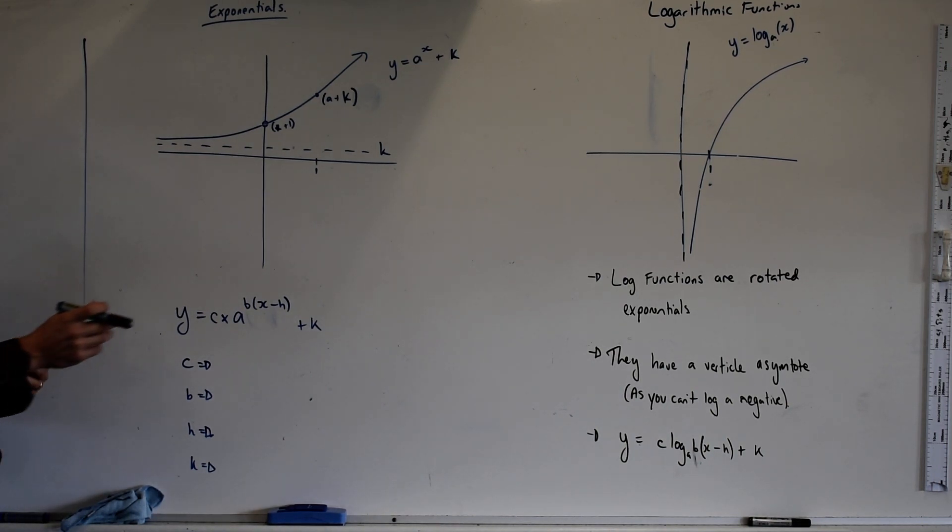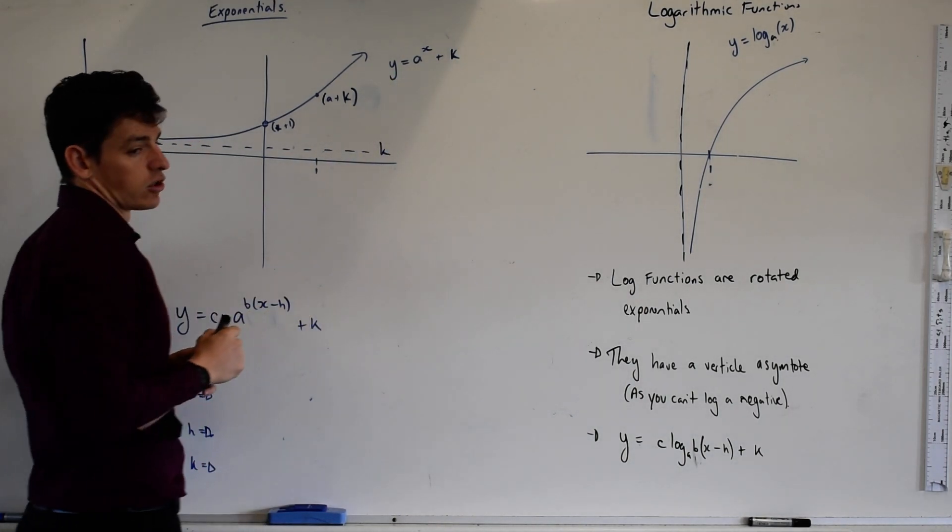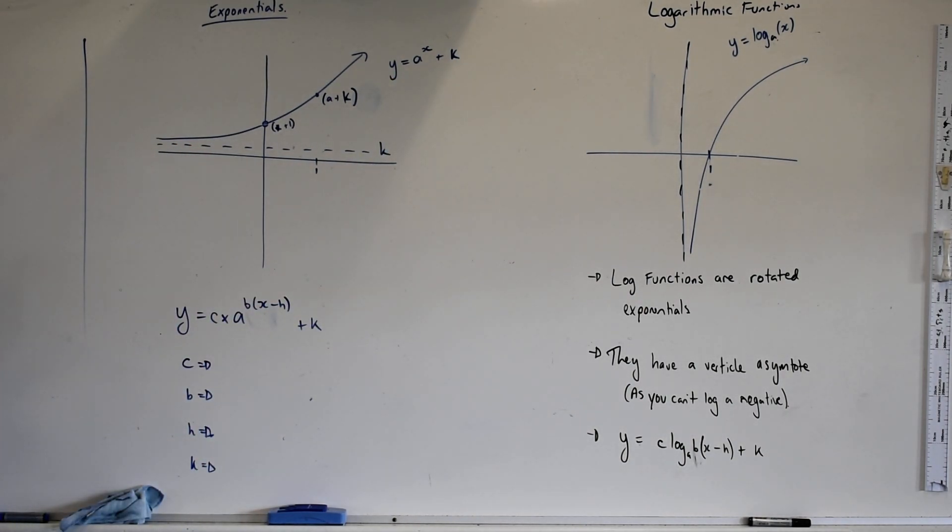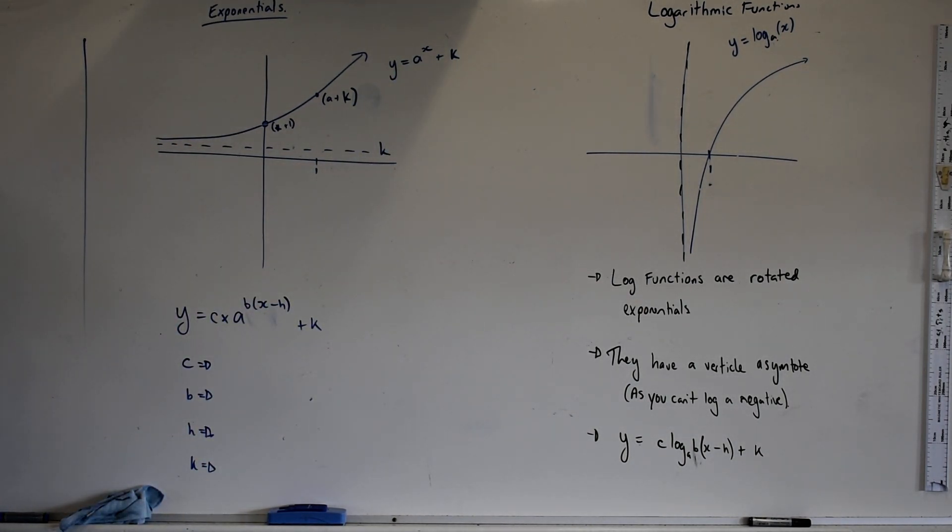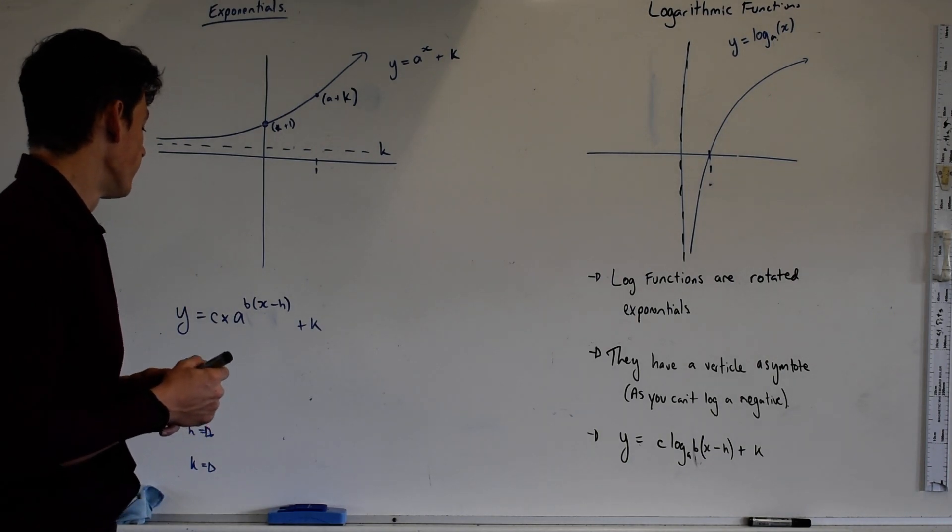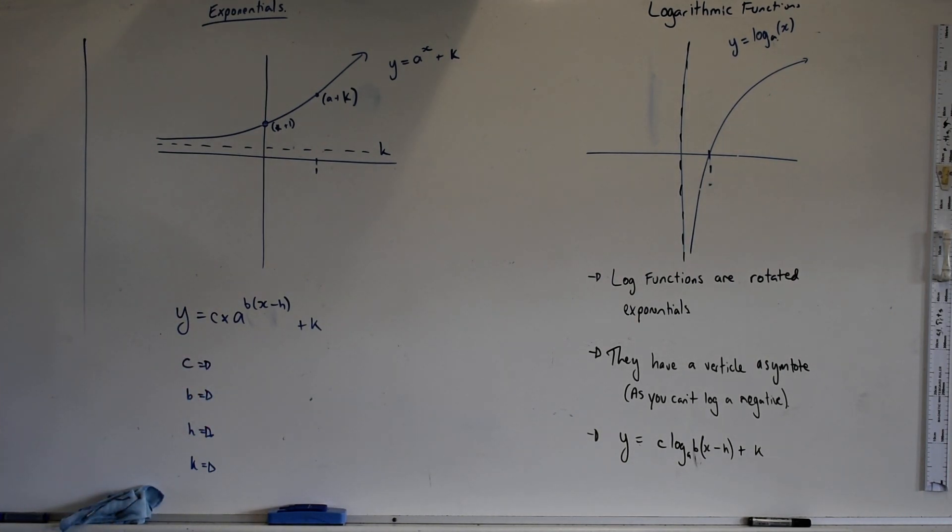I've added a k value in just because we looked at that last time. We looked at the fact that there's a vertical shift on our exponential function and k represents the location of the asymptote. So if there's no k value the asymptote occurs at y equals 0. Here's our general form.